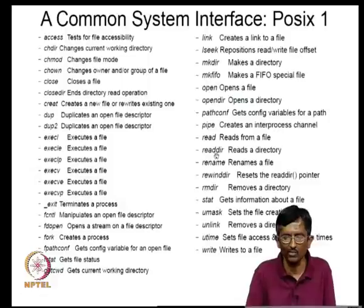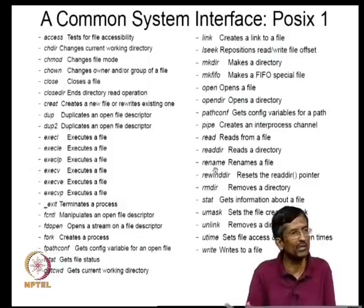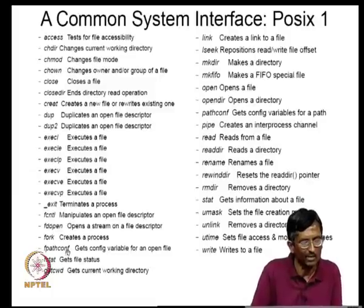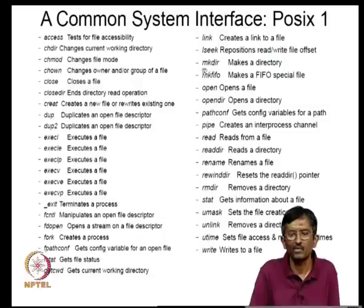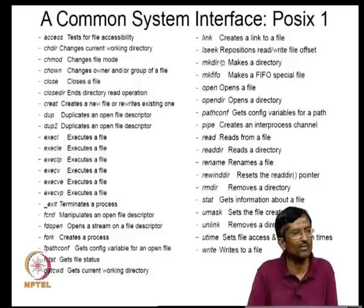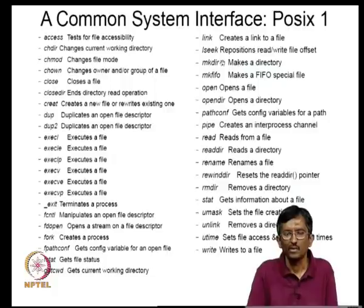You keep sequencing over entries in the directory. RewindDIR resets the directory pointer so you can go back to the beginning. MakeDir creates a directory. Once upon a time, makeDirectory was not an atomic operation, leading to race conditions — it later became an atomic operation.